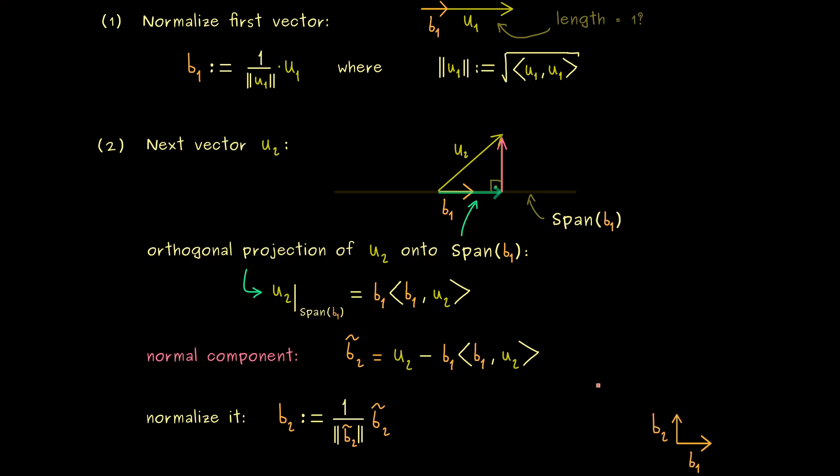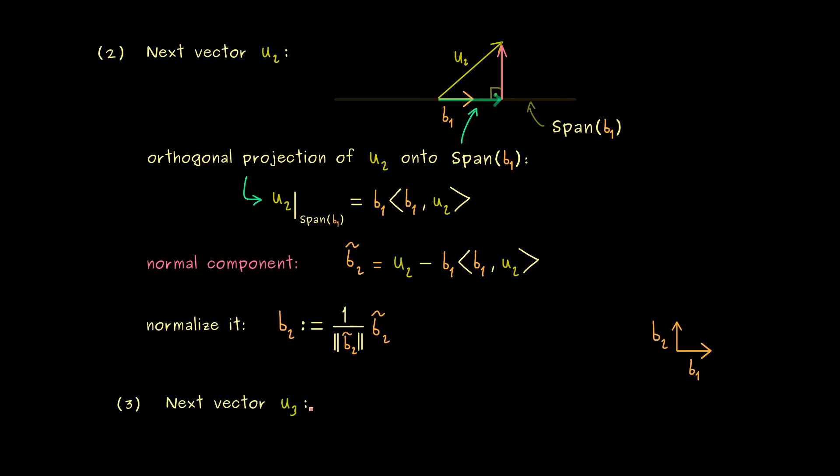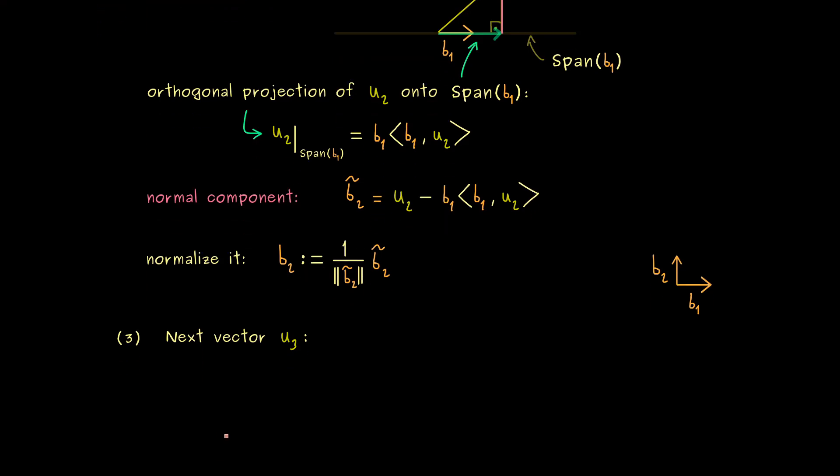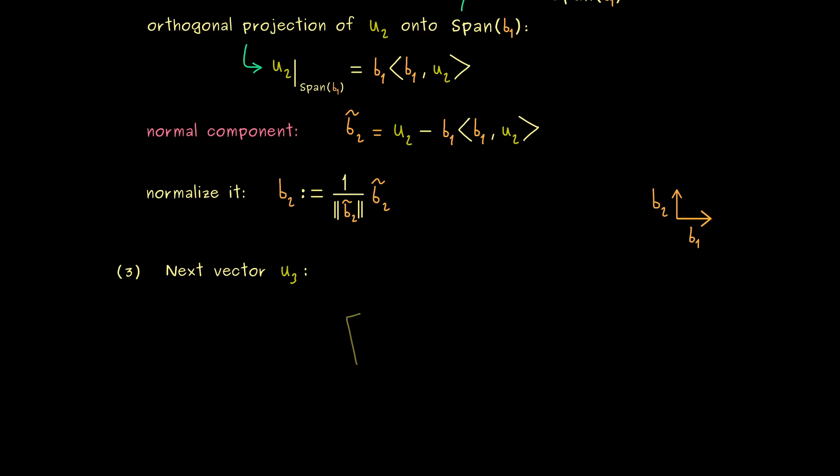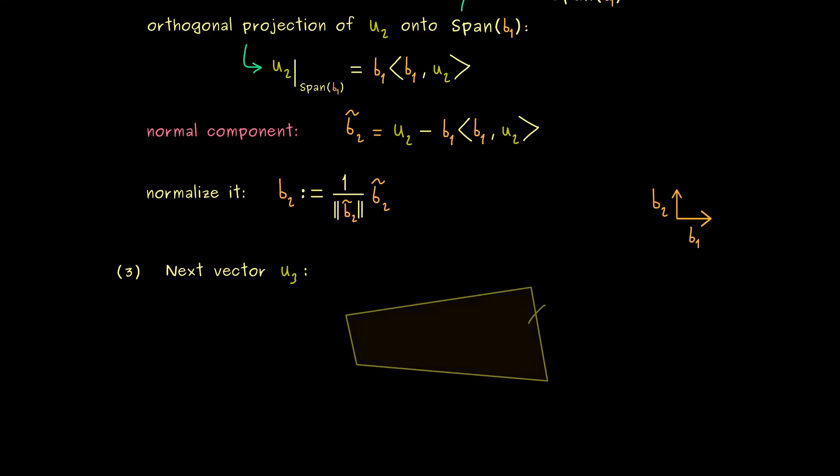And by construction it's orthogonal to b1. In other words, now we already have an ONB of this two-dimensional subspace. And with that knowledge we can just continue with the third vector. So in the third step we just have to consider u3 now. And there we can use that b1 and b2 already span a two-dimensional subspace. So in some sense it's similar to before. Here we just have the span of two vectors. And we know that u3 does not lie in this plane because originally we had a basis.